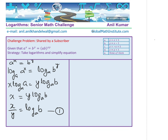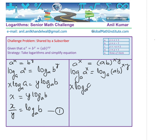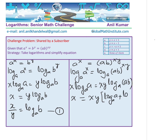Now let's do a similar calculation with the other part of the equation: a to the power of x equals ab to the power of xy. Taking log to the base a on both sides gives x times log base a of a on the left and xy times log base a of ab on the right. The left side is simply x, and on the right, applying the logarithmic product rule, we get xy times the quantity log base a of a plus log base a of b.